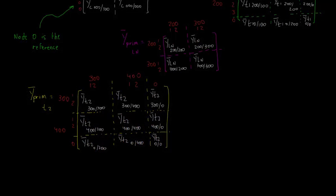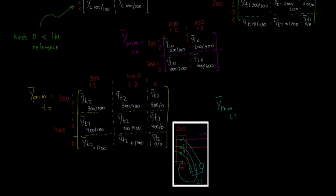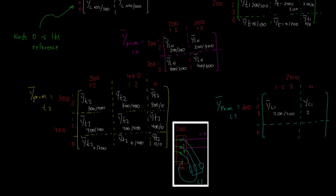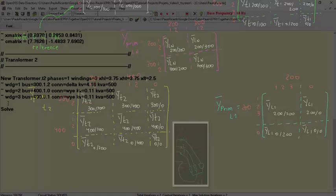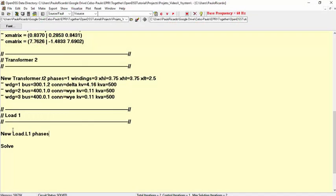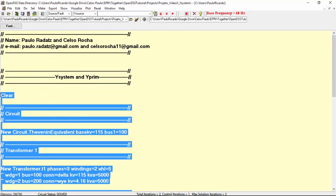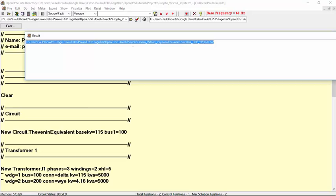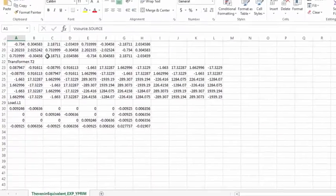Now, let's analyze the loads, starting with L1. L1 is a three-phase load and it's connected to bus 200 only. As it is grounded, it is connected to four different nodes. Then its Y-primitive matrix should be a 4x4 matrix. In OpenDSS, by defining this load and solving the circuit, we can verify its Y-primitive matrix. As you can see, it is a symmetrical 4x4 matrix, as expected.